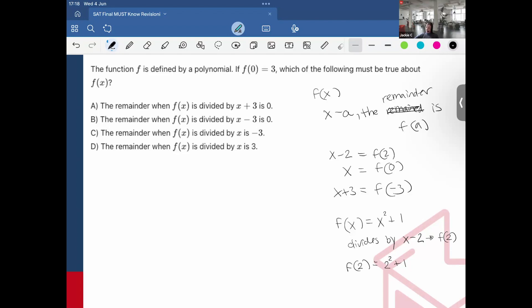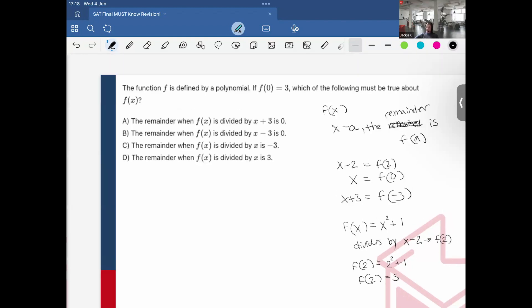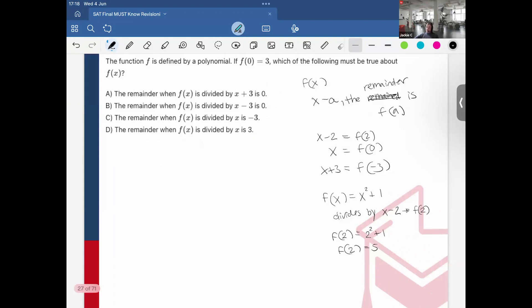I put 2 squared plus 1, and that will give me an output of 5. So this means that when x squared plus 1, the function is divided by x minus 2, the remainder is going to be 5. Okay, I hope that makes sense. And it's amazing, because if you know that, then that makes this problem really easy to solve.